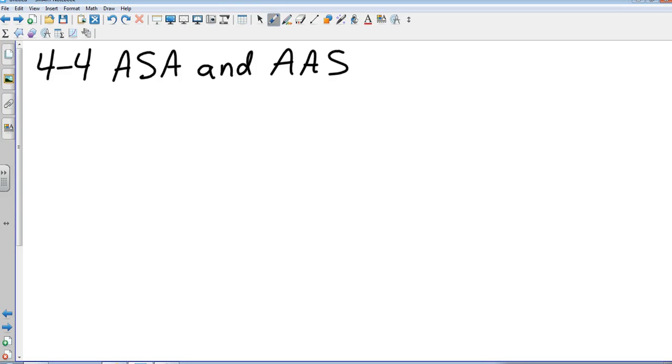Okay, 4-4 proving triangles congruent using Angle Side Angle and Angle Angle Side. We're going to have some long definitions on these as well, and then I'll get to a proof and show you how to use one and then we'll be set to get the work done. So let's go with Angle Side Angle first.